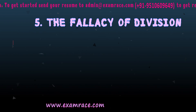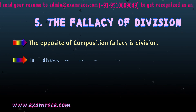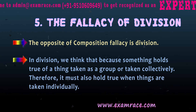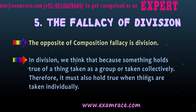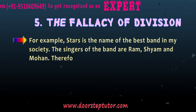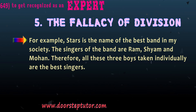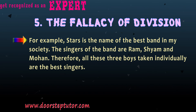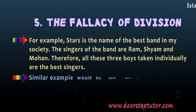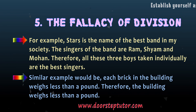Fallacy of Division: Division is the opposite of the composition fallacy. In division, we think that because something holds true of a thing taken as a group or collectively, it must also hold true when the things are taken individually. For example: Stars is the best band in my society; the singers are Ram, Shyam and Mohan; therefore all three boys taken individually are the best singers. A similar example: each brick in a building weighs less than a pound, therefore the building weighs less than a pound.